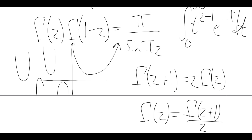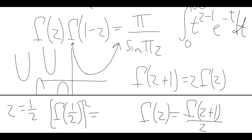Sure enough, if you plug in z equals one-half, you get gamma of one-half times gamma of one-half, so gamma of one-half squared equals pi over sine of pi over 2, which is 1. So again, we get gamma of one-half equals the square root of pi.